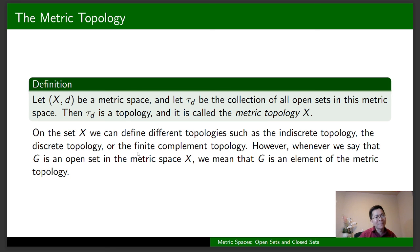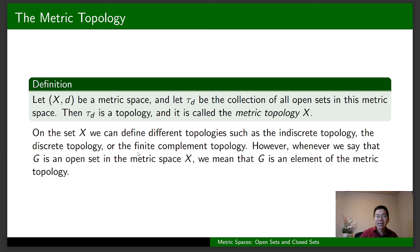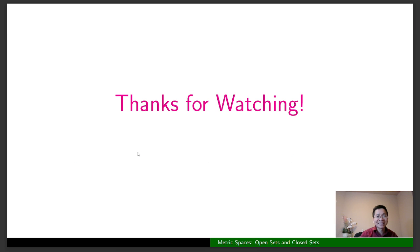On X we can define different topologies such as the indiscrete topology, the discrete topology, or the finite complement topology. However, whenever we say that a set T is open in the metric space X, we mean it is an element of the metric topology — that is, no matter what c you take in T, there is some radius r greater than zero such that the open ball with center c and radius r is a subset of T.